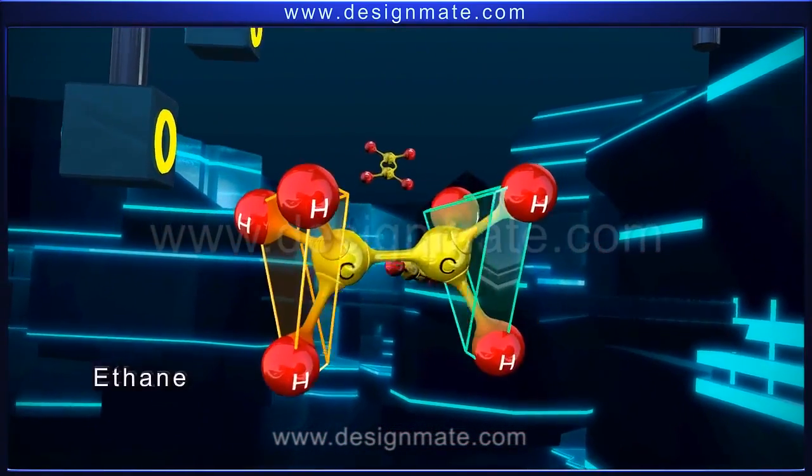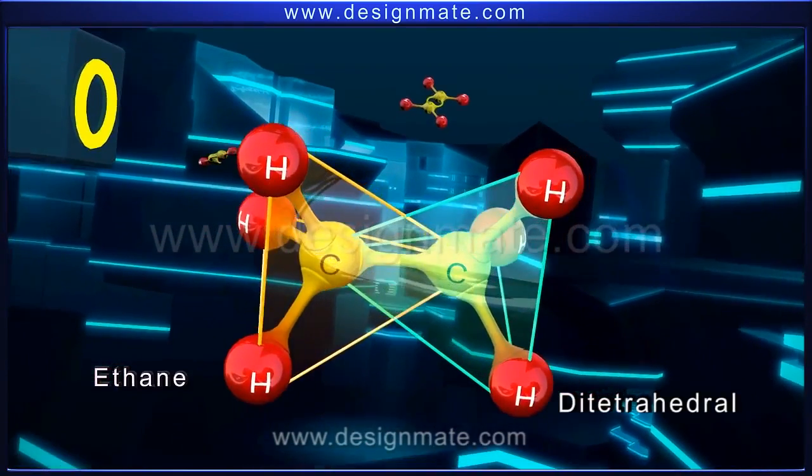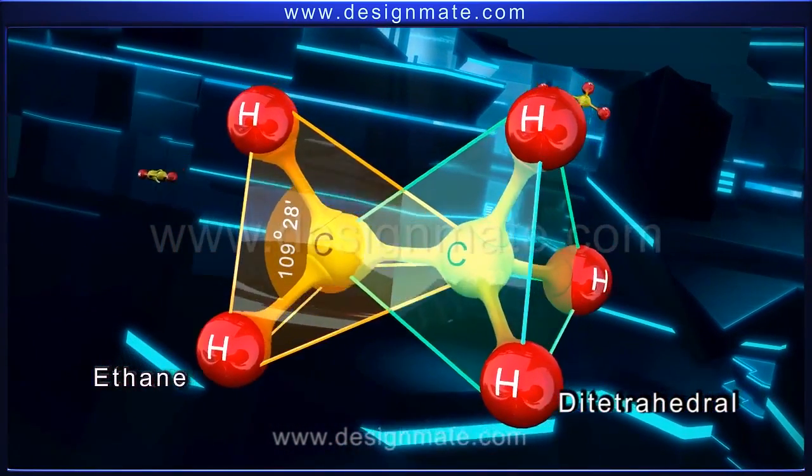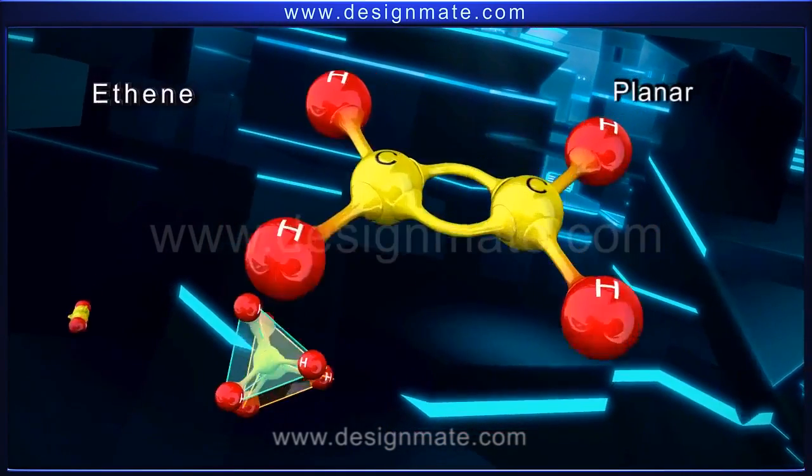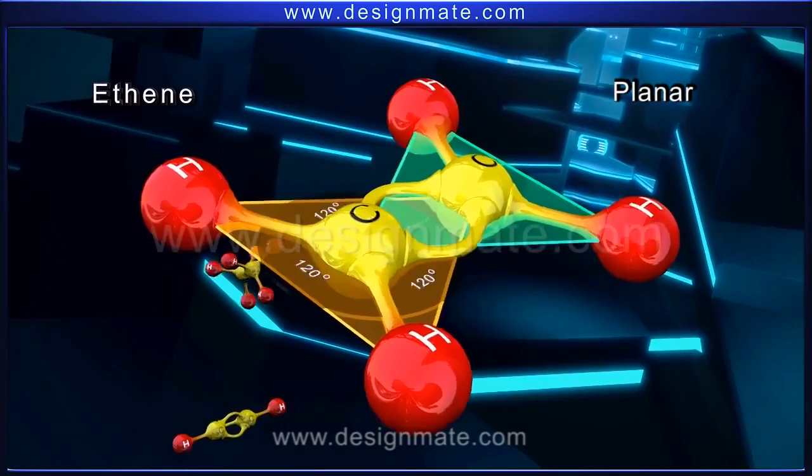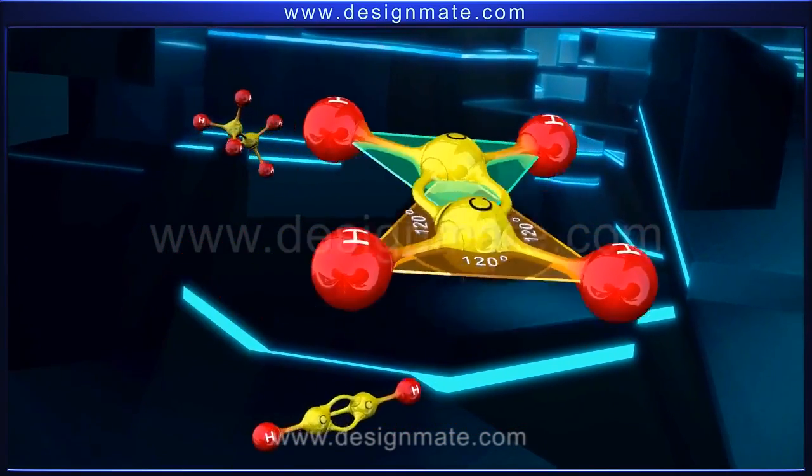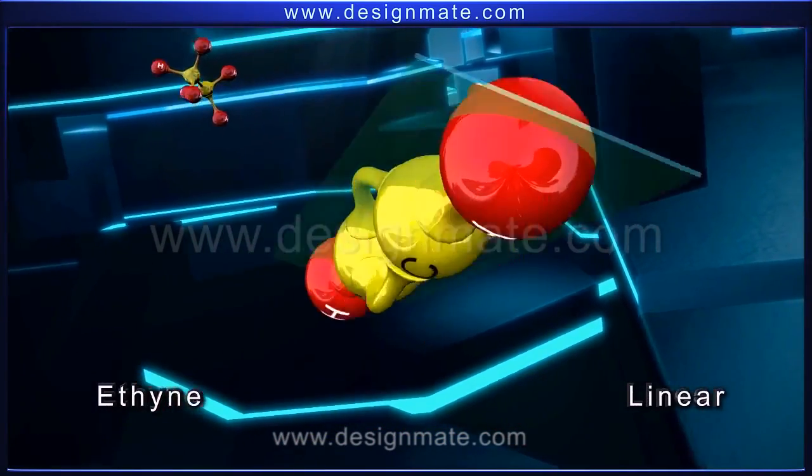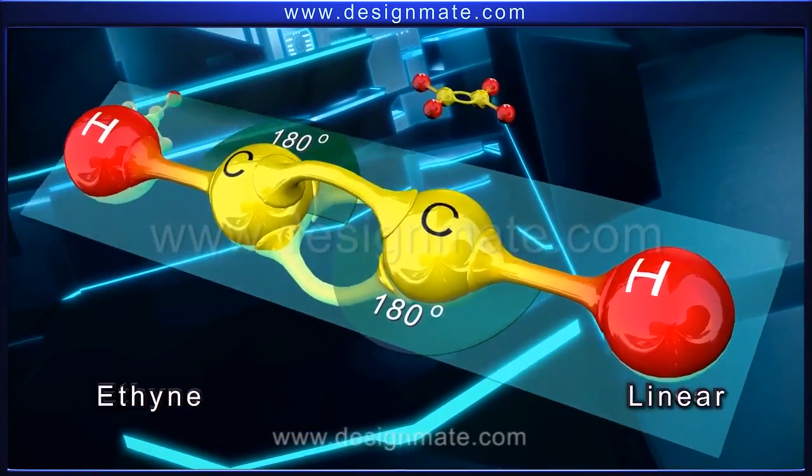The ethane molecule is ditetrahedral and has a bond angle of 109 degrees 28 minutes. Ethene is a planar molecule with a bond angle of 120 degrees, while ethyne is a linear molecule with a bond angle of 180 degrees.